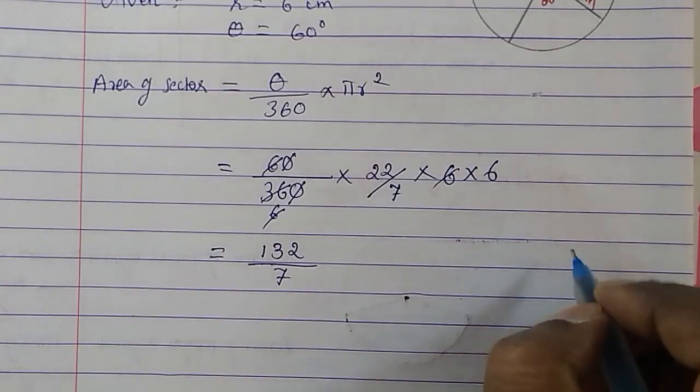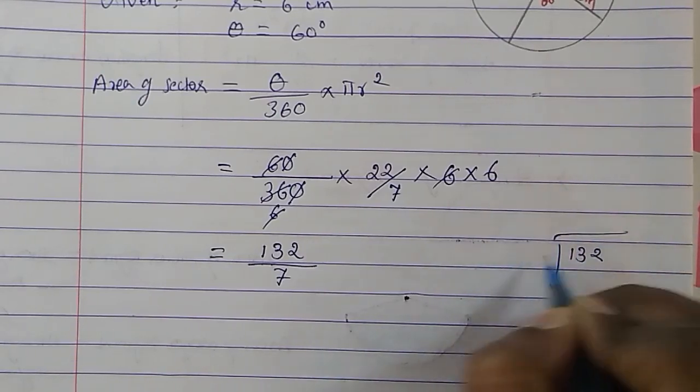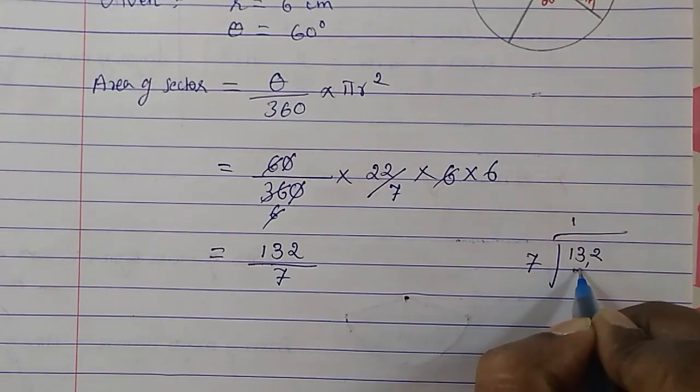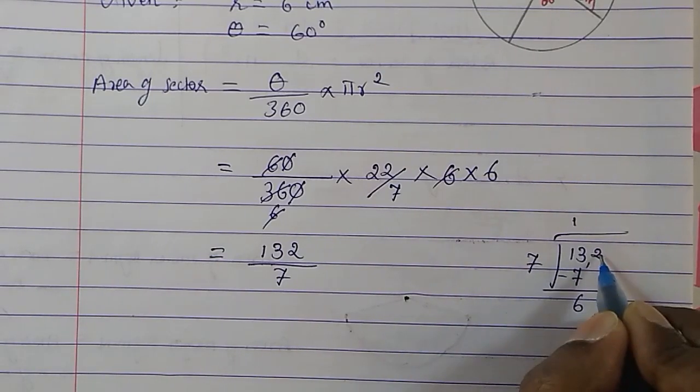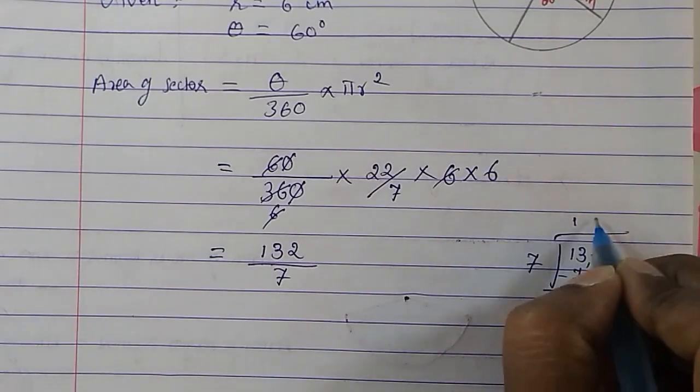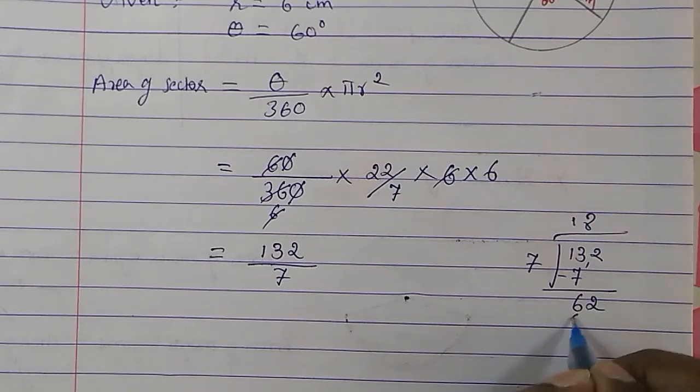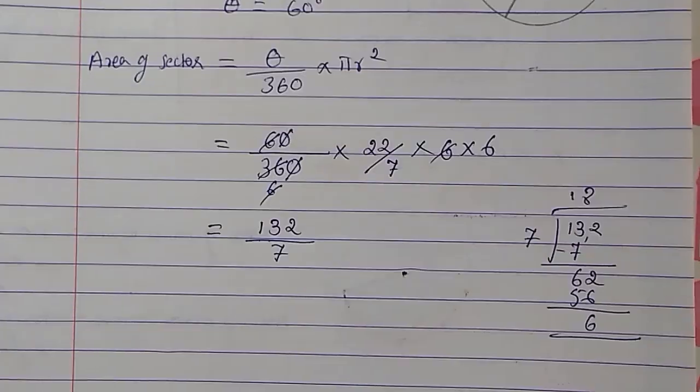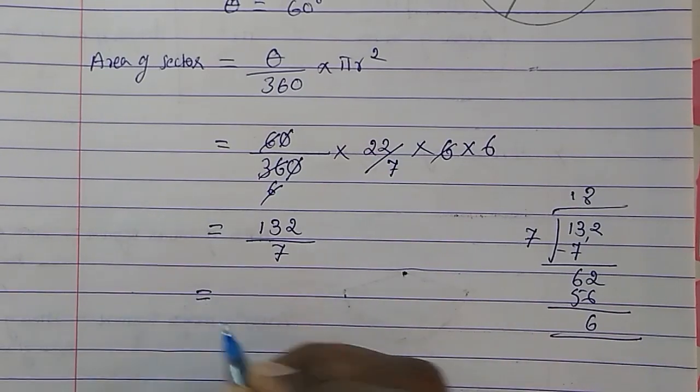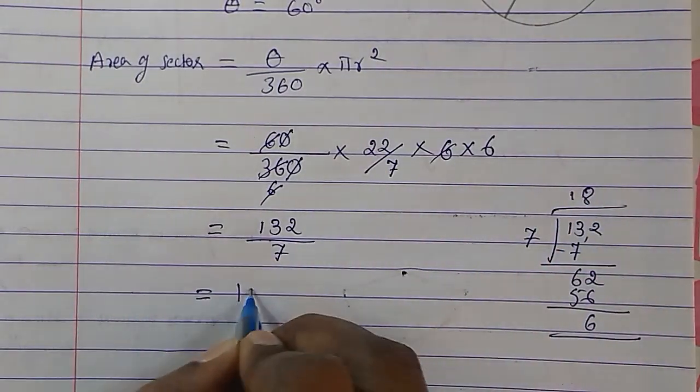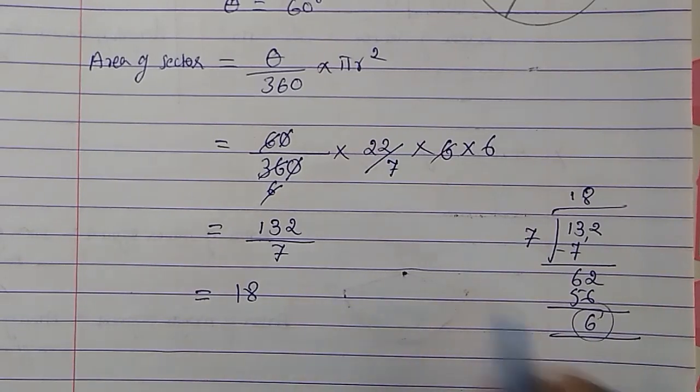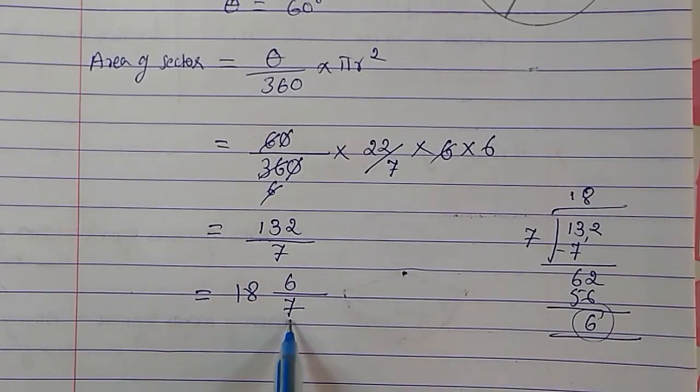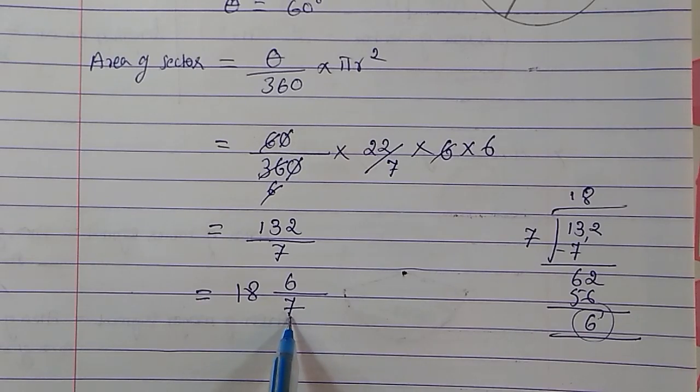Now divide 132 by 7. In 13, 1 times 7, we get 7, subtract to get 6. Bring down 2, we get 62. 8 times 7 is 56, subtract to get 6. Stop here. The quotient is 18, remainder is 6, and the divisor is 7.